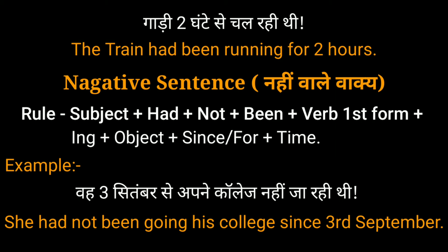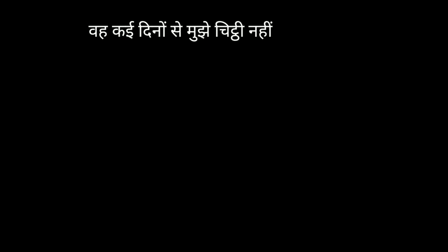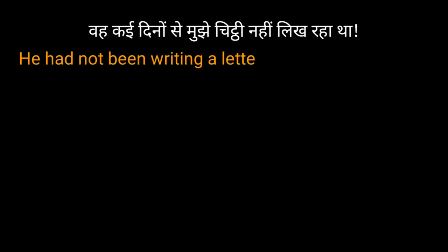In the negative example, she is subject, had been is helping verb, not के लिए नहीं का प्रयोग किया गया है, going verb की first form + ing है, से के लिए since का प्रयोग किया गया है. Second example: वह कई दिनों से मुझे चिट्ठी नहीं लिख रहा था — He had not been writing a letter to me for many days. इसमें he subject, had been helping verb, not के लिए नहीं, writing verb की first form + ing, से के लिए for का प्रयोग किया गया है, दिन time है.